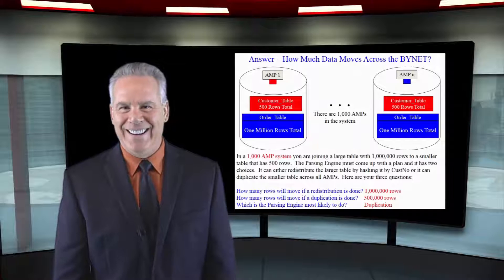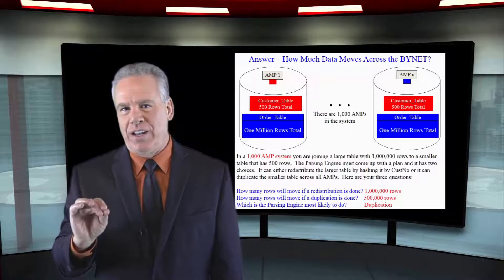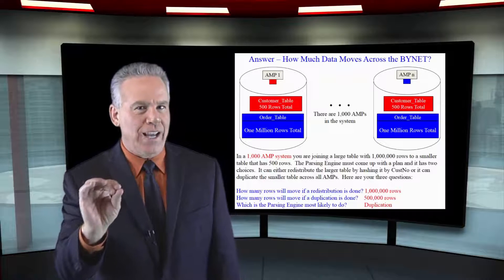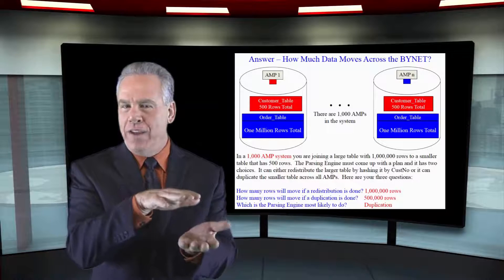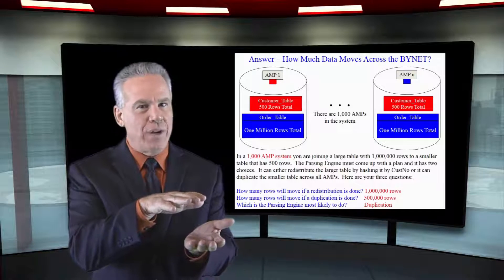Tricky, huh? If the parsing engine decided to duplicate the smaller table of 500 rows on every amp,